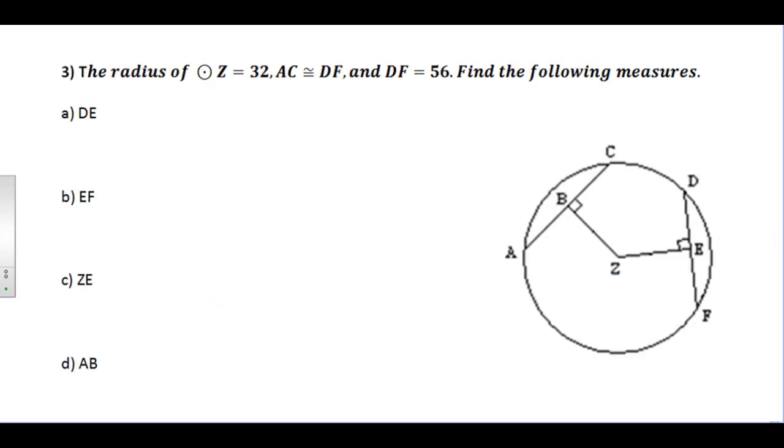And number three: the radius of circle Z is 32, AC and FD are congruent to each other, and DF is 56. Well, again, we have that theorem that says if I have a radius or diameter which is perpendicular to a chord, it's going to bisect the chord and its arc. So if this whole segment DF was 56, I know that DE would have to be half of that, or 28.